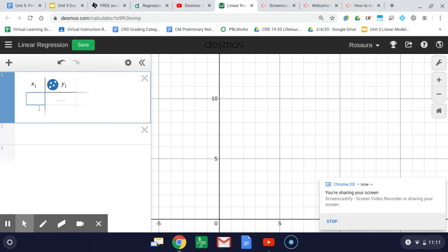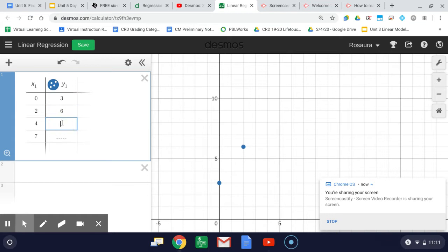and let's say my data is 0, 2, 4, 7, and my y values are 3, 6, 7, 9. Notice the data is somewhat linear, but it's not exactly linear,